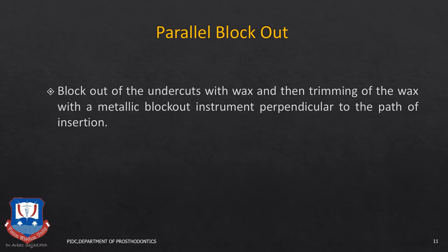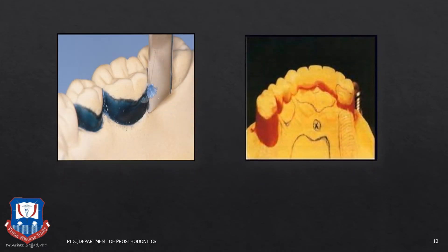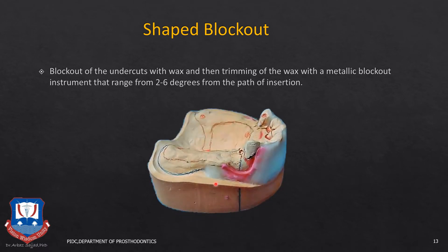In parallel block out, the undercuts on the teeth and the gingival crevices that are below the height of convexity of the tooth are blocked out with carving wax or inlay wax. The undercuts beneath the height of maximum convexity of the tooth are blocked out — usually undercuts for the proximal plates, for the retentive arm, below the reciprocal arm. This is also done using the surveyor, maintaining the master cast on the surveyor at the determined path of insertion using the tripoding marks.